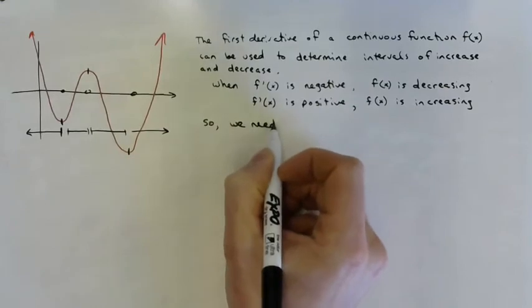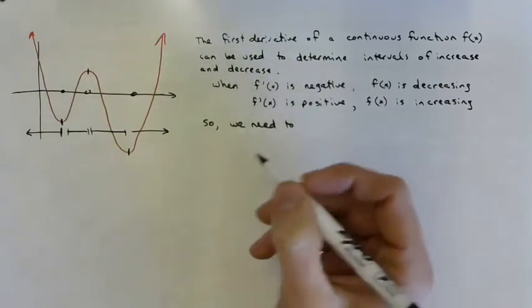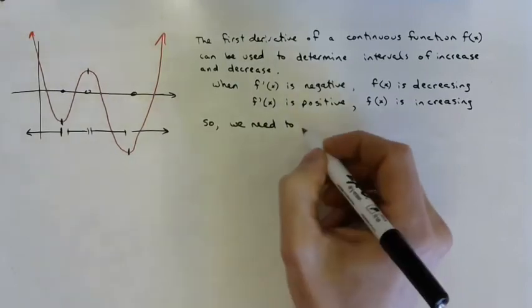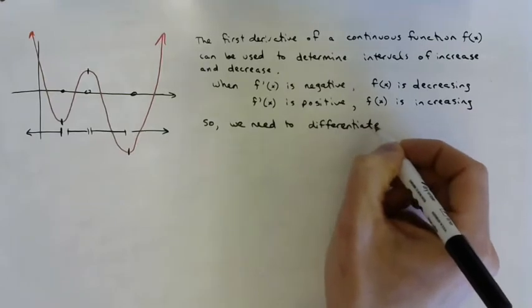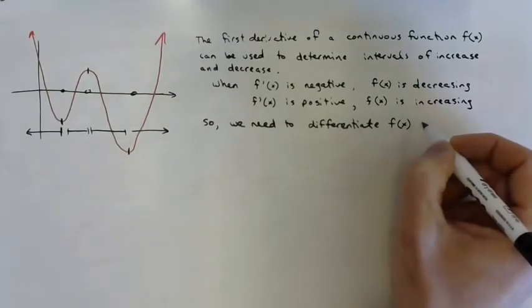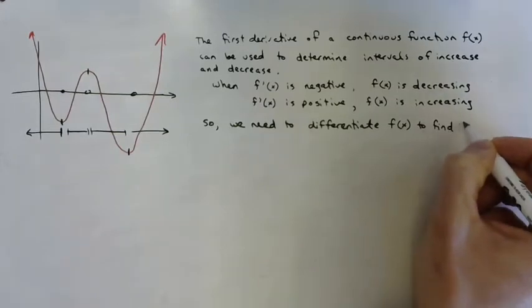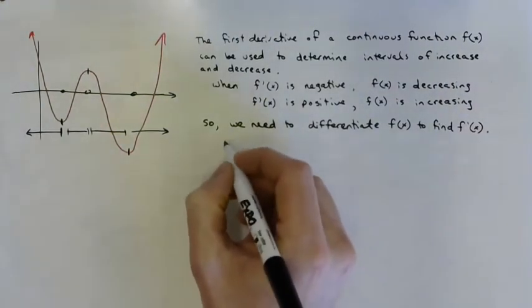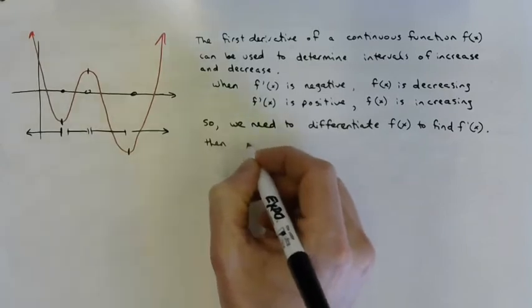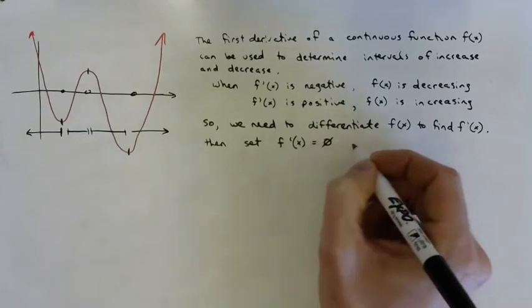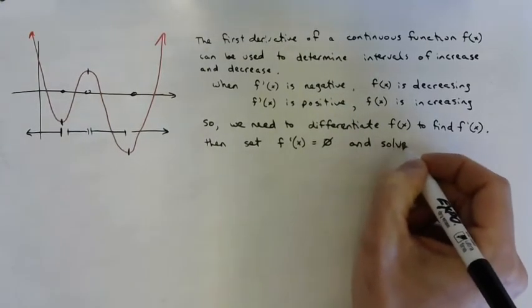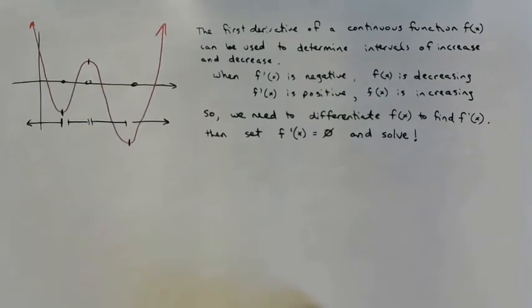What we're going to do is: differentiate f of x to find f prime of x, then set f prime of x equal to zero and solve.